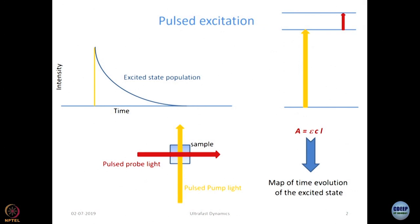The advantage of working with absorbance is that it is proportional to concentration. The probe light is absorbed by the excited state and not by the ground state, so if I measure the absorbance of the probe light I get to know the concentration of the excited state. Whatever absorbance value I get at time zero should give me a measure of the concentration of the excited state produced as a result of instantaneous excitation.